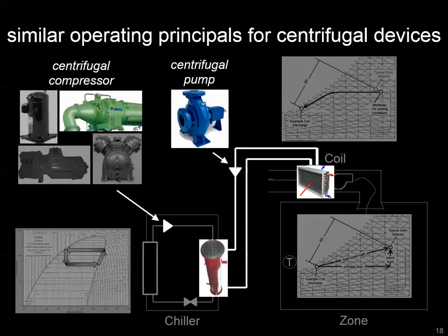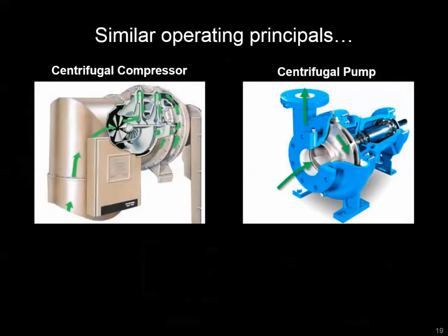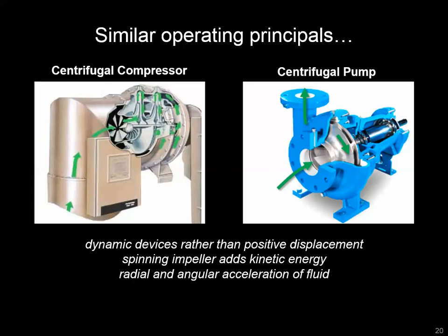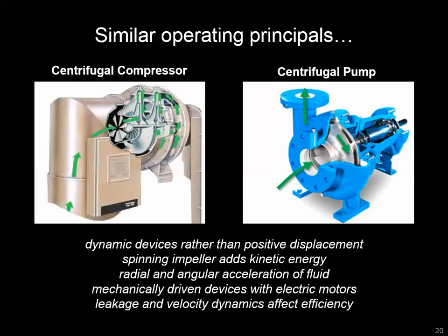The centrifugal pump has a lot of similarities with the centrifugal compressor. First, they're both dynamic devices — rather than being a positive displacement or piston-style compressor or pump — which means you have a spinning device called an impeller that accelerates and pressurizes the fluid. Both are driven by an electric motor, and because of their shape, geometry, and operation, they share similar efficiency characteristics and hydraulic losses.